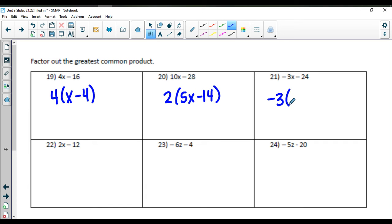And here, we're going to factor out that negative three, and we're going to get x plus eight. Factor out a two x minus six. And down here, we're going to factor out a negative two, which will give us negative three z plus two.